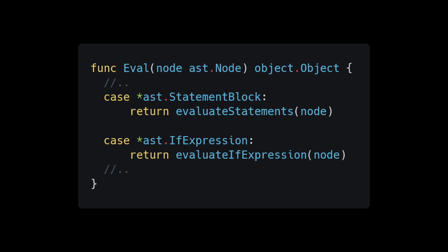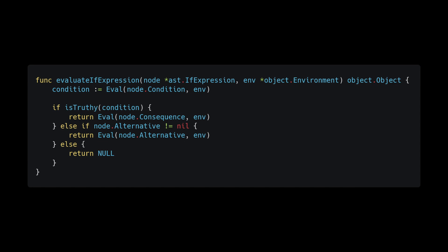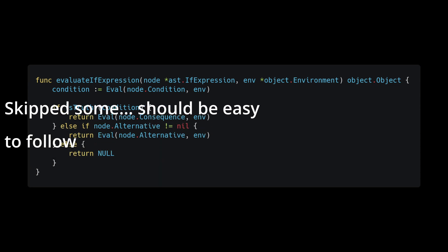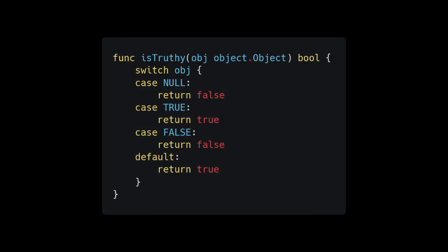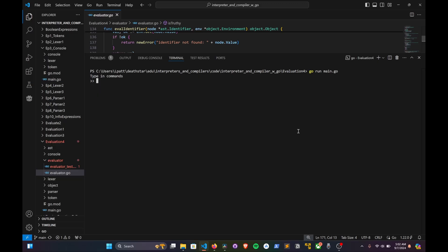The if expression case calls a helper method called evaluate_if_expression where we pass in the node. Let's write that helper method — it takes an if expression node as a parameter and returns an object type. The first thing to do is evaluate the condition expression inside the node, then call a helper method is_truthy. The is_truthy helper is very simple: we pass in an object, and if the object is null or false we return false, otherwise we return true.